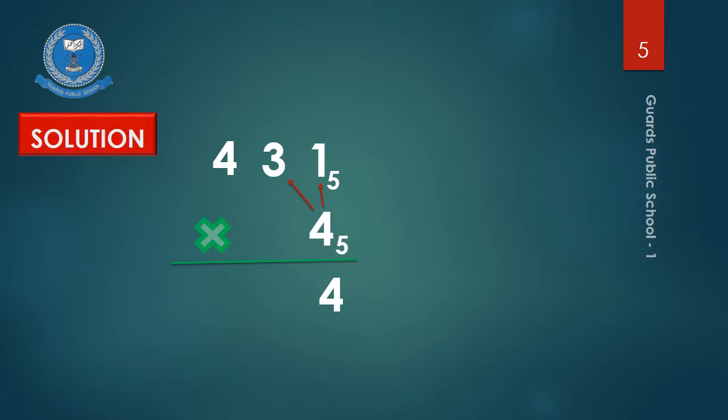Students, tell me, can we write 12 here? 12 is a decimal number. It is not a base 5 number. Therefore, we cannot write 12 here. We must know that 12 is equal to 2, 2 with base 5. Kya hum yaha 12 likh sakte hai? No. Base 5 mein 12 equal hota hai 2, 2 ke.